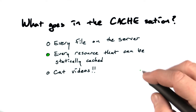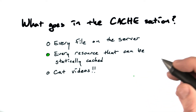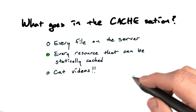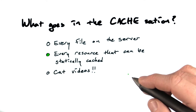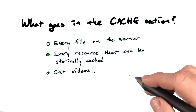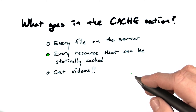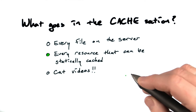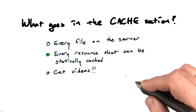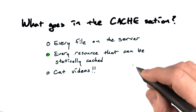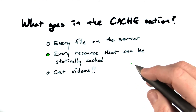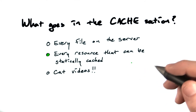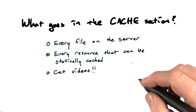Now, if your application is a collection of funny cat videos, of course you may have some of those in your application and in the cache. But keep in mind that some implementations have limits on the size of a single application cache. Sometimes that limit is as small as 5 megabytes, so that might not do fluffy justice.